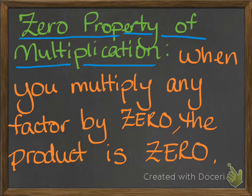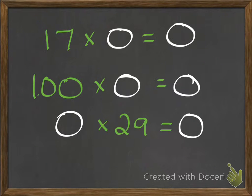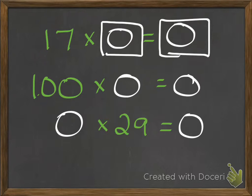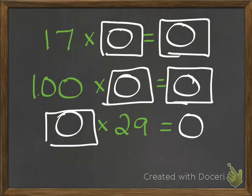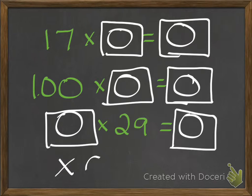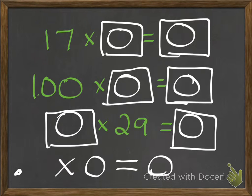The zero property of multiplication is: when you multiply any factor by 0, the product is 0. It's kind of the opposite of the identity property. For example, 17 times 0 equals 0, 100 times 0 equals 0, and 0 times 29 equals 0. It doesn't matter what number you multiply times 0 — your answer is always going to equal 0. It could even be a decimal; 1/1,000th times 0 will still equal 0.